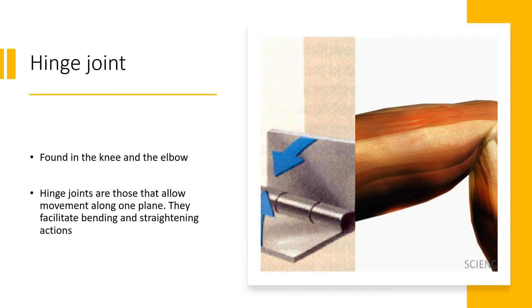Then we have the hinge joint, which fits its name well. It's found in the knee and the elbow and looks very much like a hinge you'd find on a door. Hinge joints allow movement along one plane and facilitate the bending and straightening actions of both your arms and your legs.